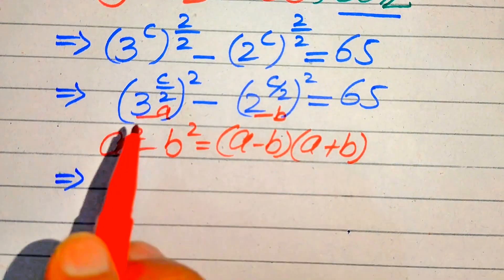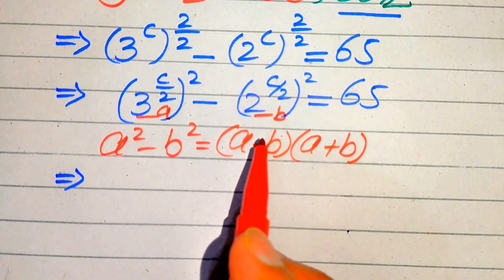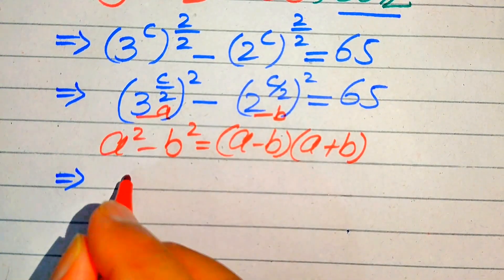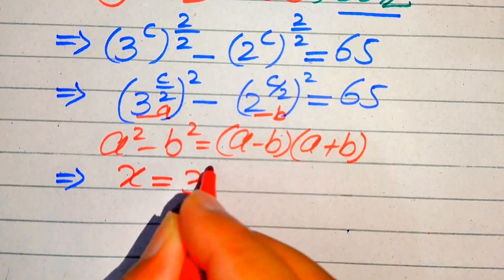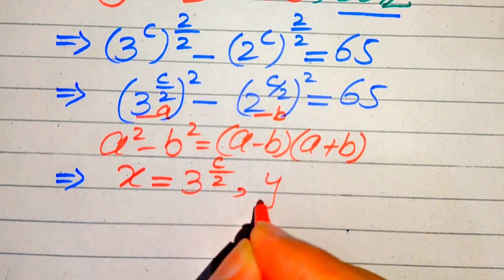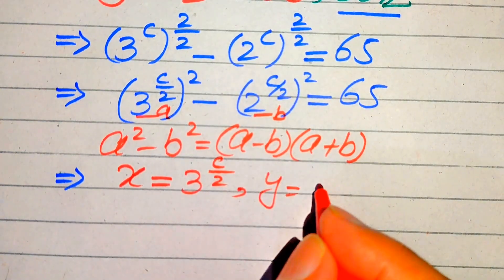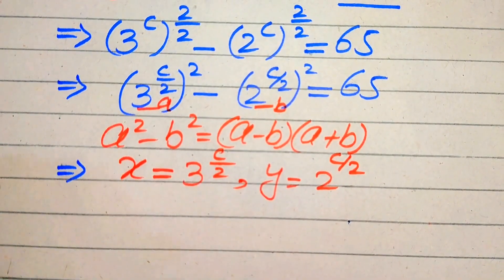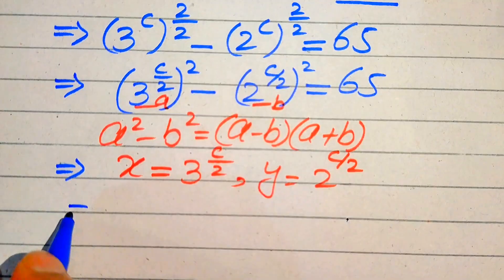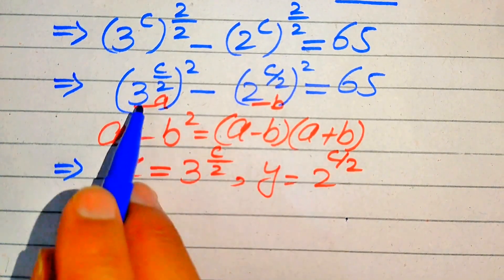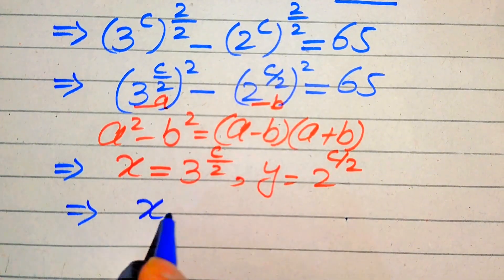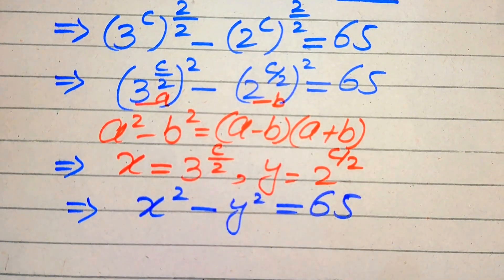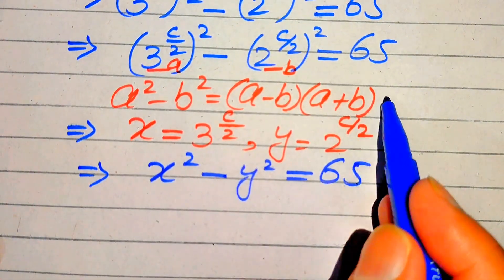We convert this exponential equation into polynomial form using substitution. We let x equal 3 to the power of c over 2, and y equal 2 to the power of c over 2. Substituting these into the above equation, it becomes x squared minus y squared equals 65, and now we apply the difference of squares formula.